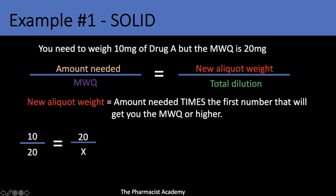So 10 over 20 equals 20 over x. The 20 on the right side came from using multiplier 2, so 10 times 2 gives a new aliquot weight of 20. If you solve for x, your total dilution should be 40 milligrams, which will contain 20 milligrams of drug A plus 20 milligrams of lactose.